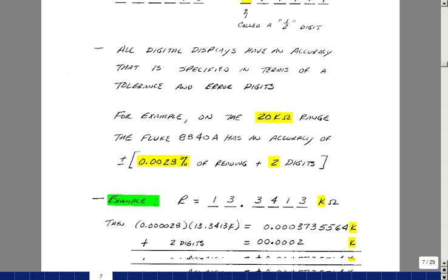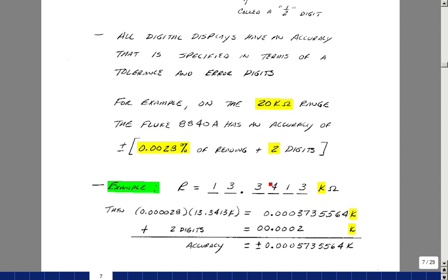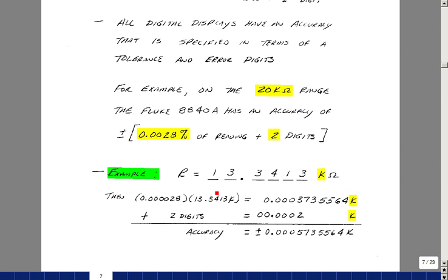Let's do an example. Suppose I am on the 20k ohm range. I can read up to actually 19.9999k ohms, so it's possible to have a reading of 13.3413k. If we take 0.0028% of this reading, that means throw two more zeros in here, we get this result.